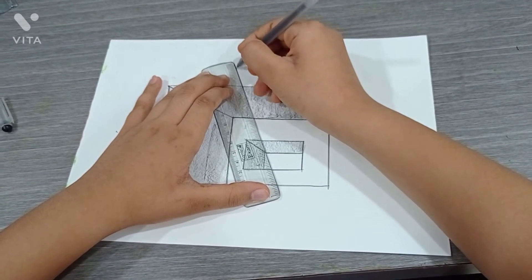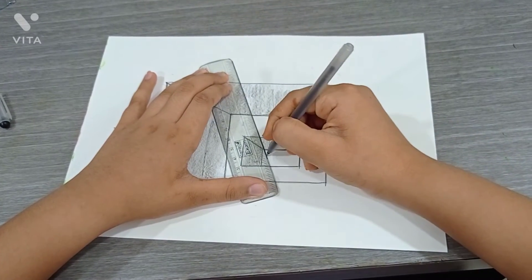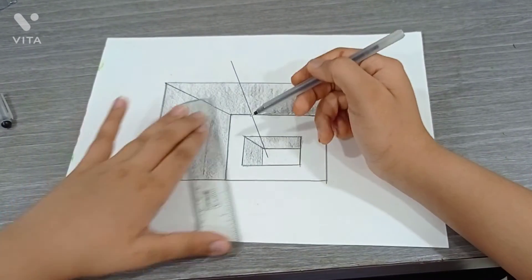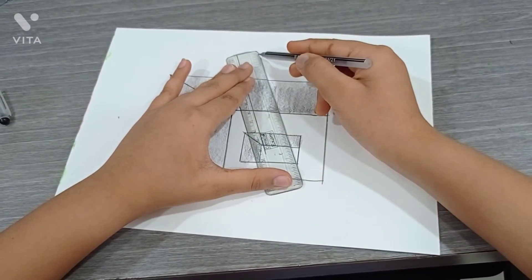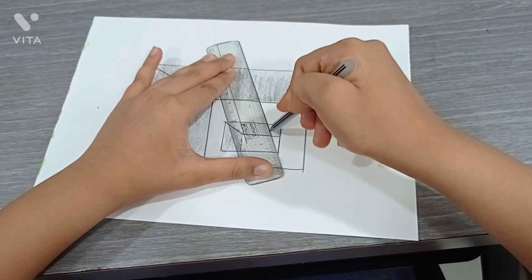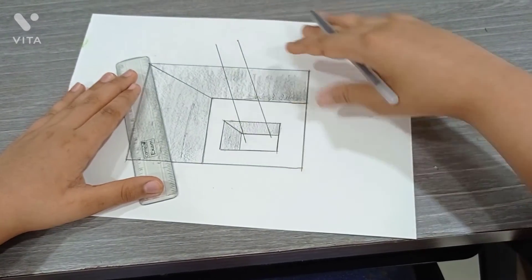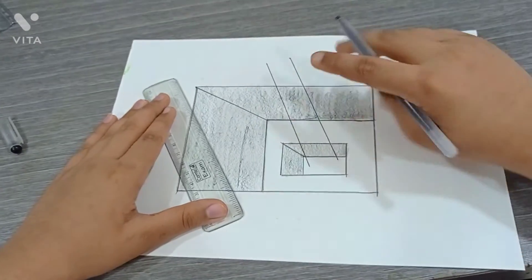Then this line. Now at some distance the same way, we have to draw another line. Now we have to draw the middle lines.